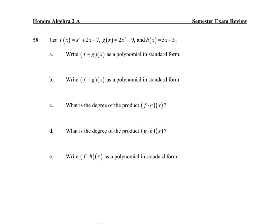We have to add f and g. I'm going to combine like terms. It's in standard form because the exponents decrease in order starting at highest to lowest. For subtraction, that's going to be minus 2x² minus 9, so -x² + 2x - 16.